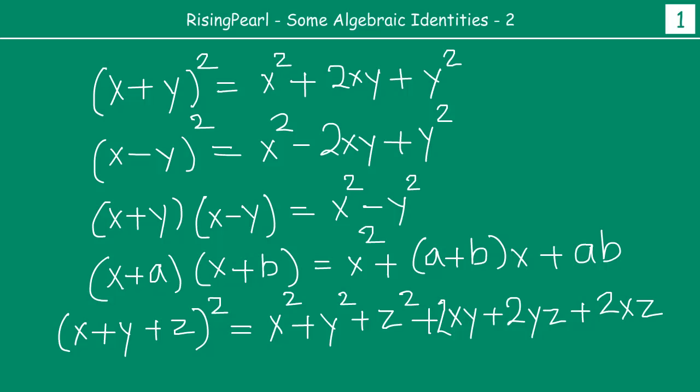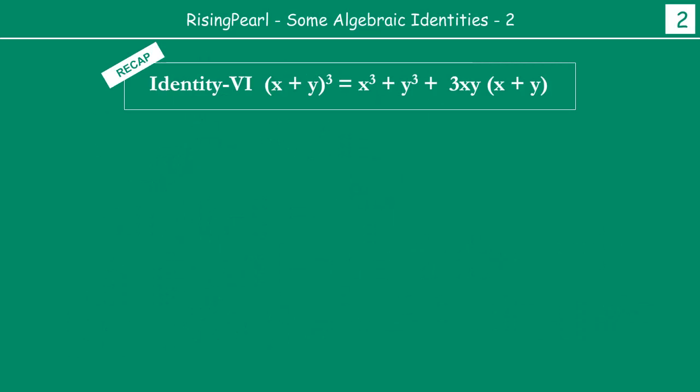Now this time we are going to take a look at some of the newer identities. Again, we are saying this is a recap that you have done in your last classes, earlier classes. So identity 6, instead of doing squares, how about we do cubes. So if you take x plus y and if you do a whole cube, so x plus y whole cube will be equal to x cube plus y cube plus 3xy times x plus y.